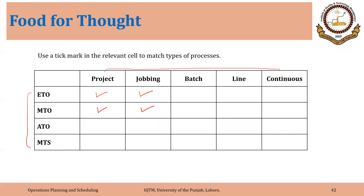On the other extreme, make-to-stock organizations are almost always using line processes — like cars and motorcycles, as in many examples we saw — or they are continuous organizations, like cement or fertilizer organizations.